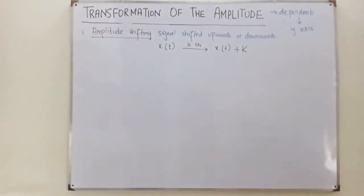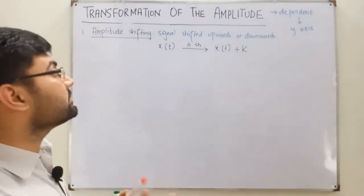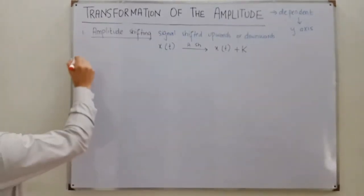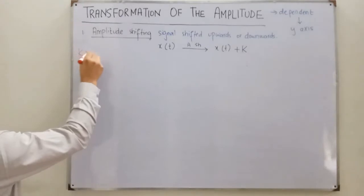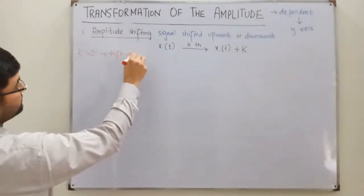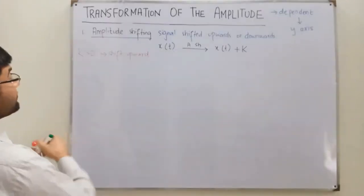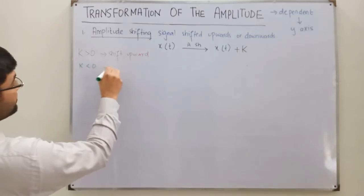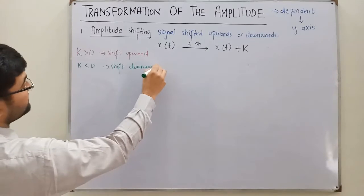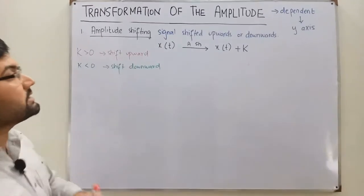Everything depends on the constant k. If k is greater than zero, we have a shift upward. If k is less than zero, we have a shift downward. If k equals zero, we have no shift — we get the same signal.